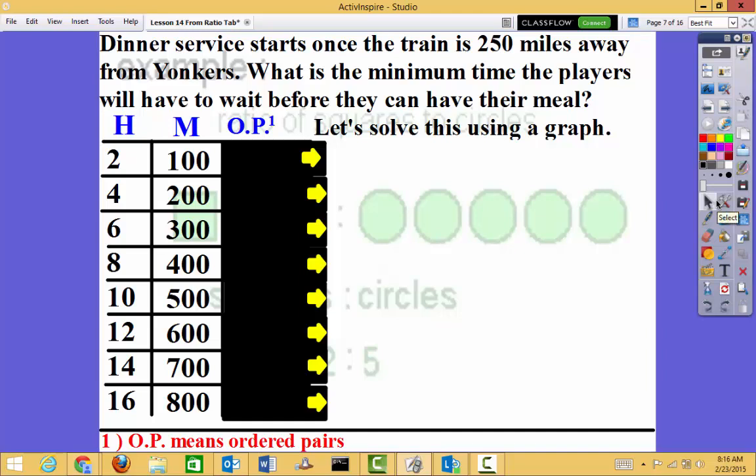Let's look at this next part. Dinner service starts once the train is 250 miles away from Yonkers. What is the minimum time the players will have to wait before they can have their meal? Well, let's solve this using a graph. So remember a graph is when I have a coordinate plane and I'm going to be graphing some dots. So let's look. As an ordered pair, I'm going to have hours, miles, and OP. Well, what does OP mean? Well, you'll notice that it has this little one. So just like in reading, I look down at the bottom for a key and it tells me OP means ordered pair.